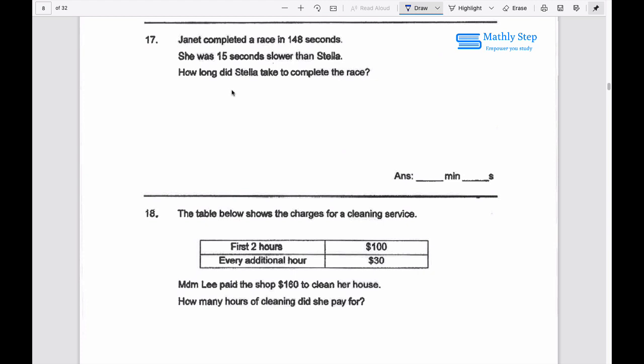Question 17. Janet completed a race in 148 seconds. She was 15 seconds slower than Stella.